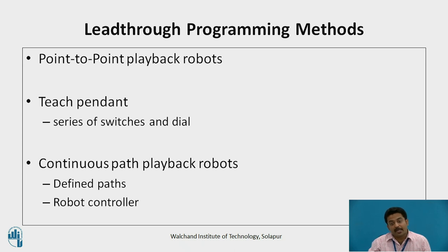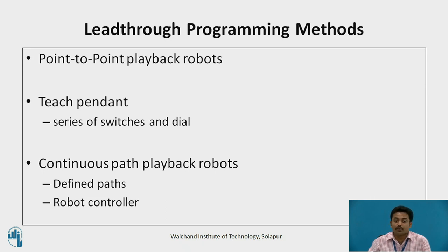In the case of point-to-point playback robots, the usual procedure is to use a control box called a teach pendant to drive the robot joints to each of the desired points in the workspace and record the points into memory for subsequent playback. The teach pendant is equipped with a series of switches and dials to control the robot's movements during the teach procedure. Continuous path playback robots also use lead-through programming. For well-defined paths, such as moving along a straight line between two points, a teach pendant can be employed to teach the locations of two points, and the robot controller then computes the trajectory to be followed.